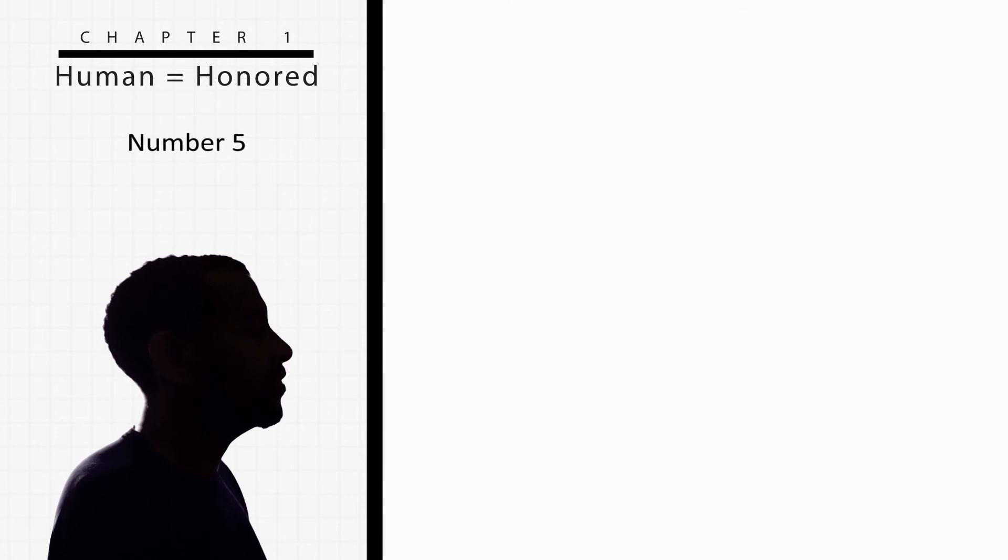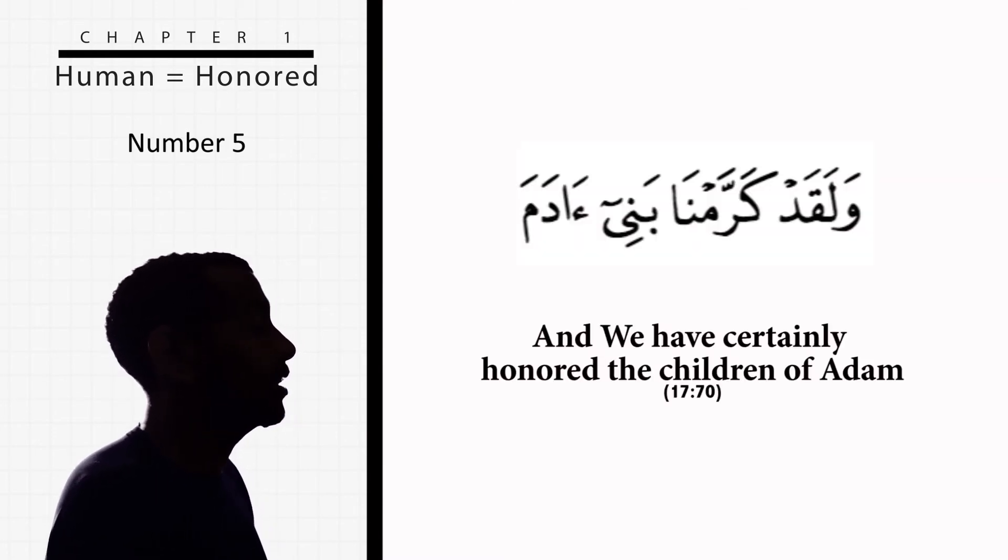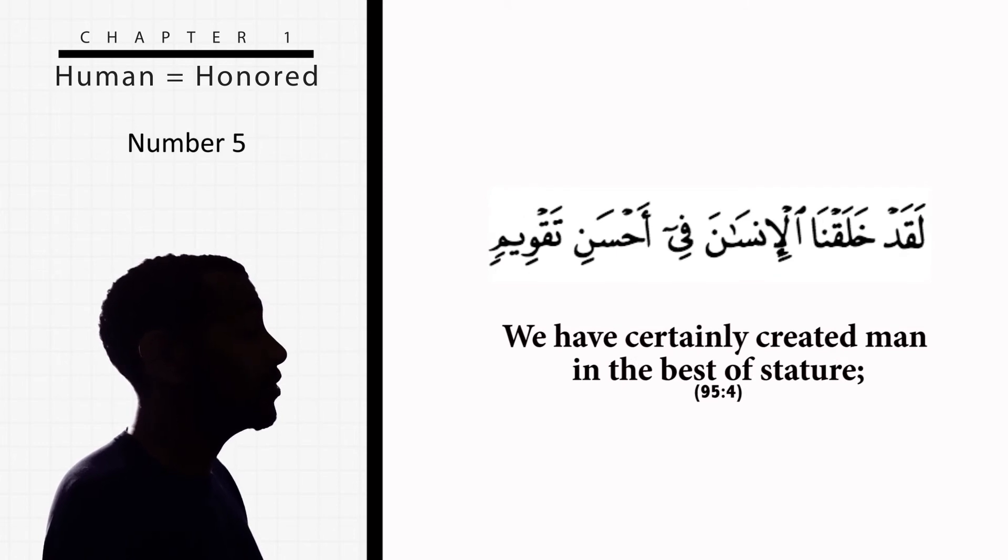Number five: Proof time. Allah says in the Quran: 'We have honored the children of Adam' - not the child, not the two children, no - all the children of Adam. He also says: 'We have certainly created man in the best of stature.'